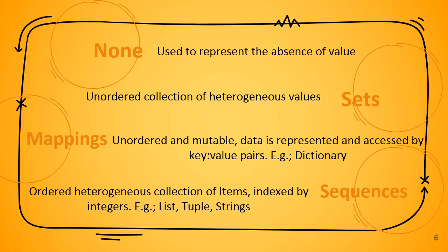Sets are an unordered collection of heterogeneous values — they can store any type of data, meaning heterogeneous data types can be stored in sets. Mappings are also unordered and mutable; their specialty is that data is represented and accessed by key-value pairs, for example dictionaries. Sequences are ordered collections of items which are also heterogeneous, indexed by integers, with elements accessed using their index position — examples include lists, tuples, and strings.